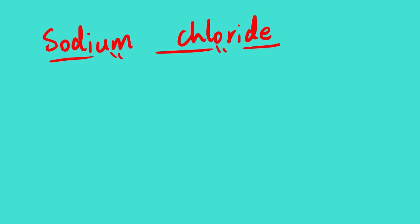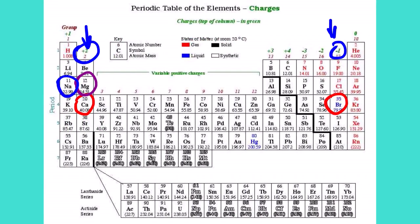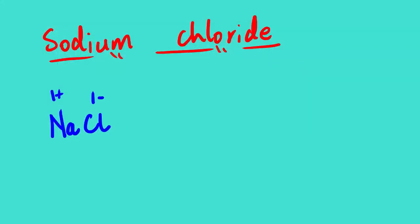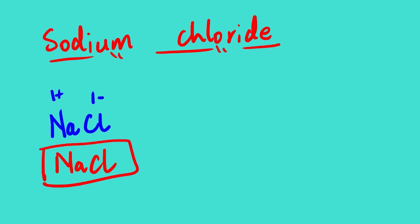For the next example, pause the video, work out the question, then play the video to verify. Sodium — we know the symbol is Na. Chloride comes from chlorine, symbol Cl. Looking at oxidation numbers on the periodic table: sodium is in group one so it has 1+, and chlorine is in group seven so it has 1-. We have 1+ and 1-, and when we cross multiply the molecular formula is NaCl.